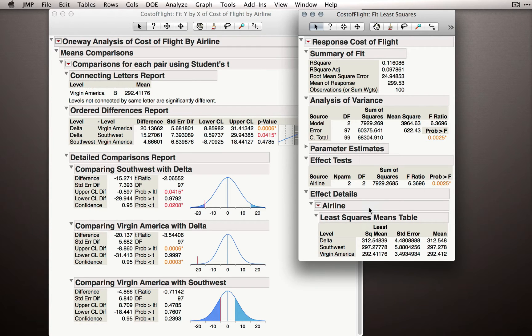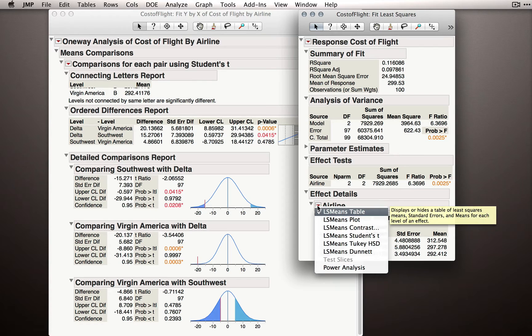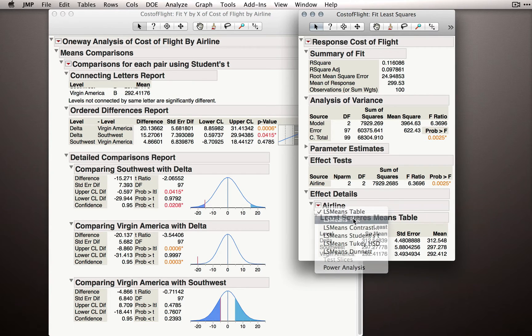To produce tests among these different means, we'll go to the red triangle next to the name of our factor, in this case airline, and you'll see we have some similar options. Here we have the option to generate the Least Squares Means Plot, which is something I recommend you turn on.